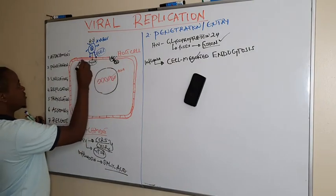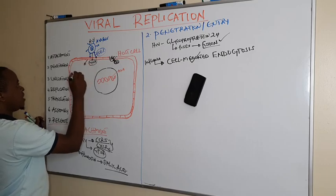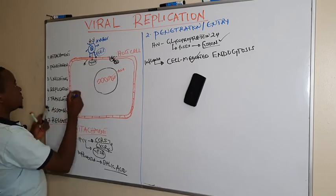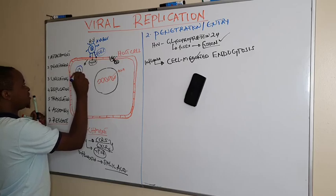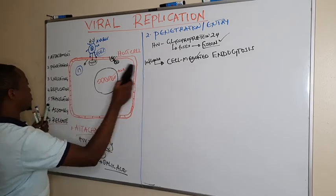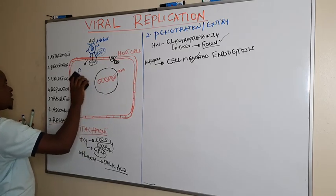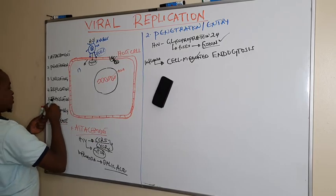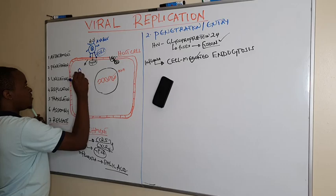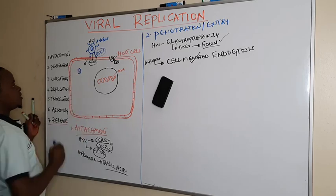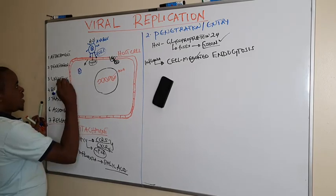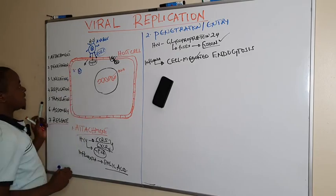After the HIV virus fuses and enters the host cell, the virus is inside together with its capsid, but it is no longer carrying the envelope. The envelope enabled it to enter; afterwards it is destroyed by endonucleases. We remain with the capsid, which contains the viral genome inside. This leads us to step number three: uncoating.